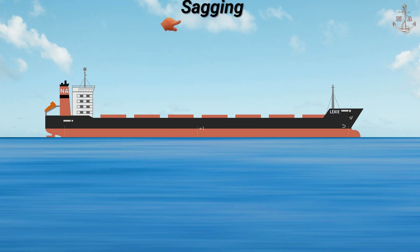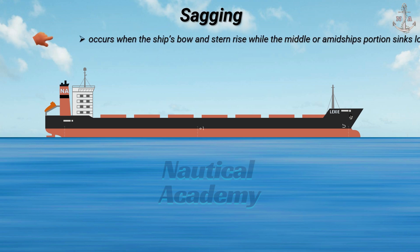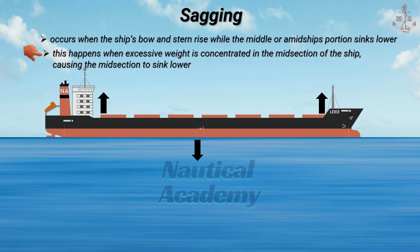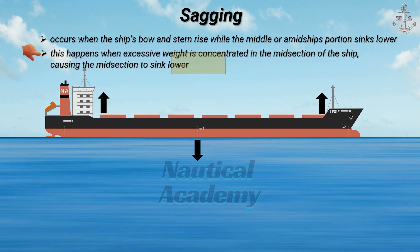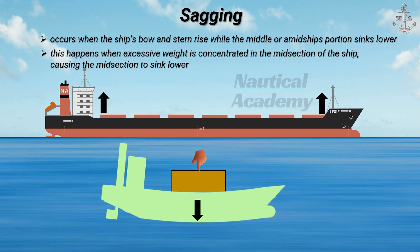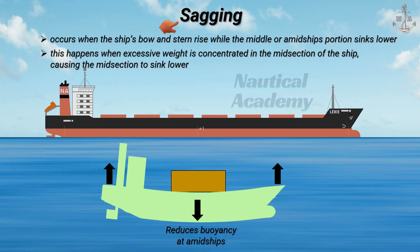Sagging is the opposite of hogging, occurring when the ship's bow and stern rise while the middle or amidship portion sinks lower. This happens when excessive weight is concentrated in the midsection of the ship, causing it to sink lower. Poor cargo distribution, such as heavy cargo stowed amidships while the bow and stern remain light, reduces buoyancy at midship, leading to sagging.